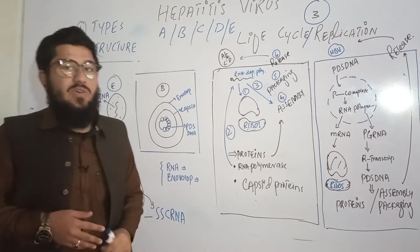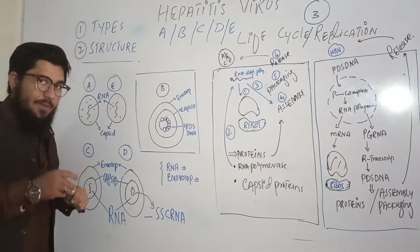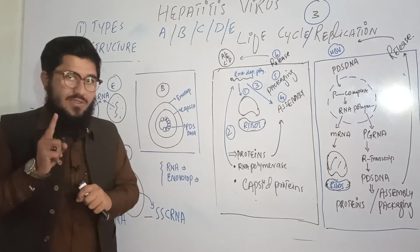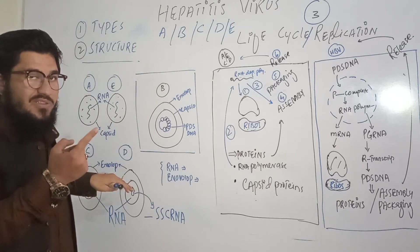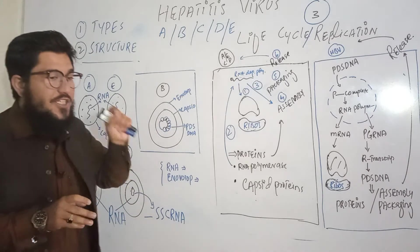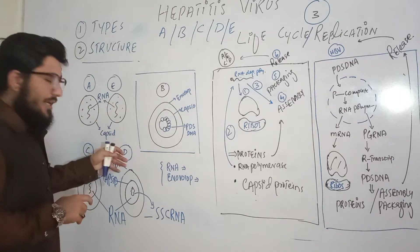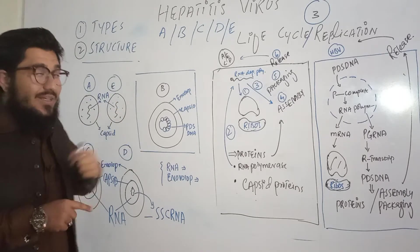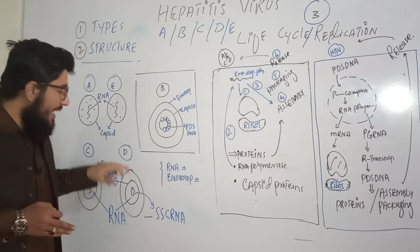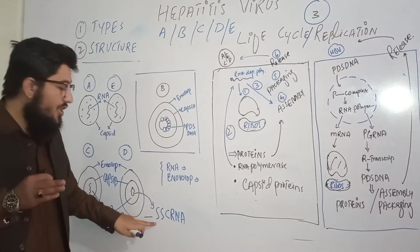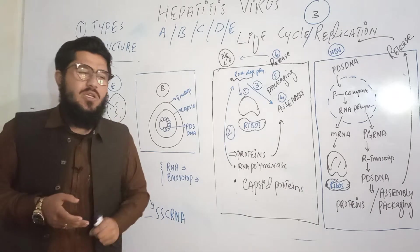Now for the structure of all types — A, B, C, D, E — there is one very simple key difference: the B virus is different from all the others. The difference is in its nucleic acid, which is partially double-stranded DNA, whereas the rest — A, E, C, D — all have RNA. Another very important difference is in hepatitis D, which has a negative-sense, single-stranded circular RNA.